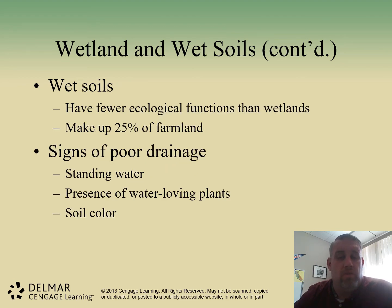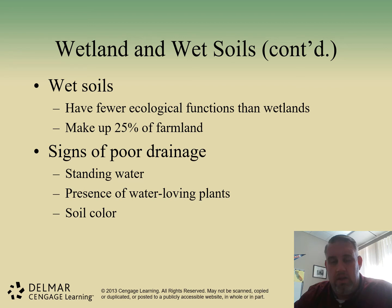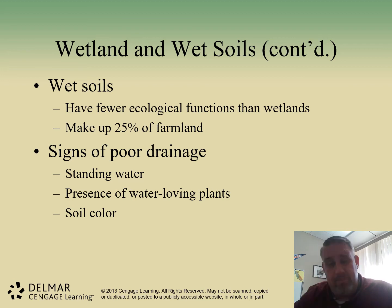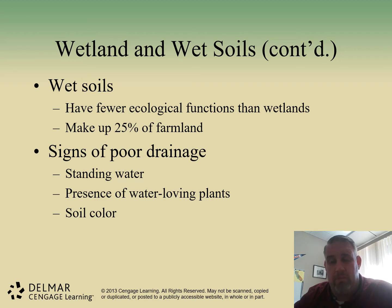Wet soils have fewer ecological functions than wetlands and can be used more as farmland — about 25% of our farmland consists of these wet soils. These soils are wet most likely due to the climate in which they exist, have poor drainage, and need plants that don't mind growing in water. You can identify poor drainage by soil color — it typically turns black because of anaerobic conditions, as different microbes permeate through the soil leaving that dark color.